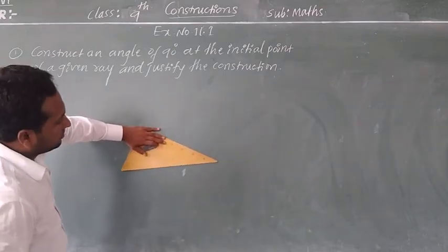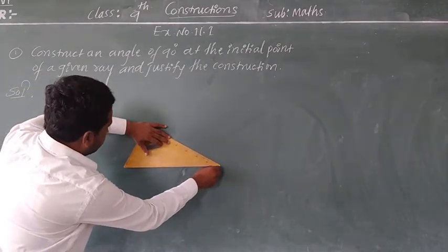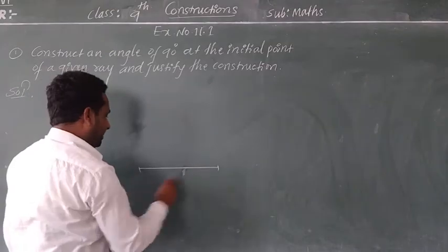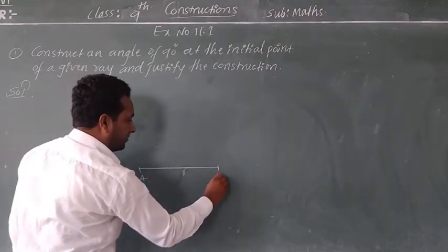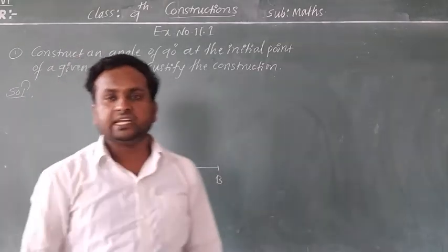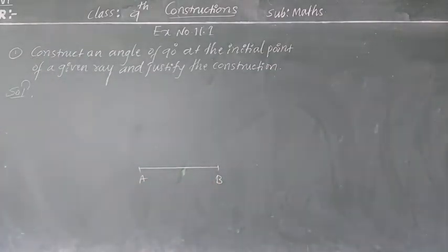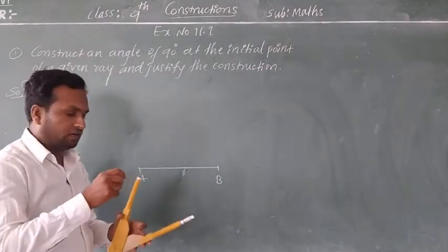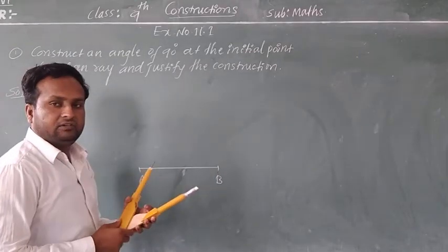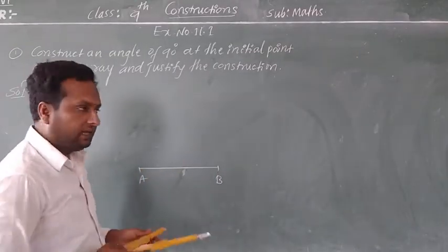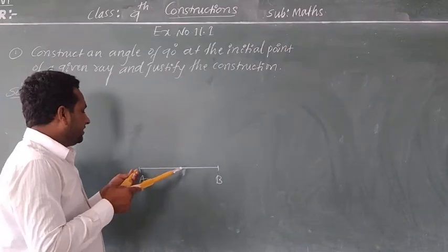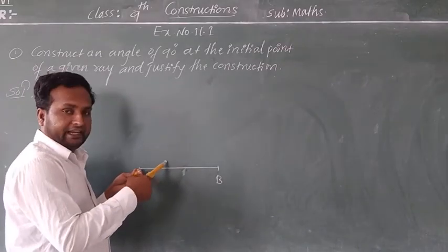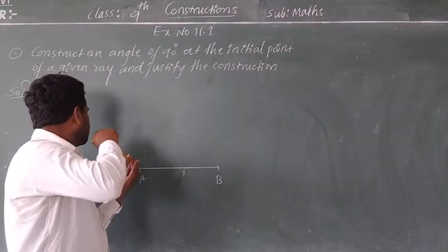First, you have to draw line segment AB. So here AB is the line segment. Now, by using a compass and scale, with A as center, take a convenient radius and draw a semi-circle.